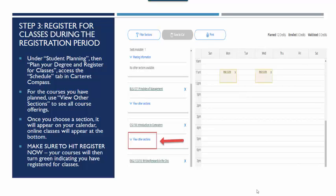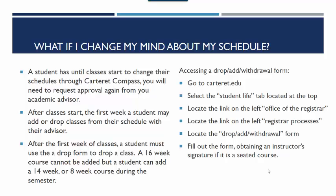If you are unsure whether you have registered for your classes, you can email me or your advisor. You can change your schedule up until classes start in Carteret Compass. If you are changing just sections, you will not need to get approval from your advisor; however, if you are changing courses, you will need to get approval again from your academic advisor. After classes start, during the first week a student may add or drop classes with their advisor. After the first week, you will need to use a drop form to drop a class. A 16-week course cannot be added after the first week, but you may add a late-start class or an 8-week course during the semester. Instructions for accessing a drop, add, or withdrawal form are provided on the right-hand side.